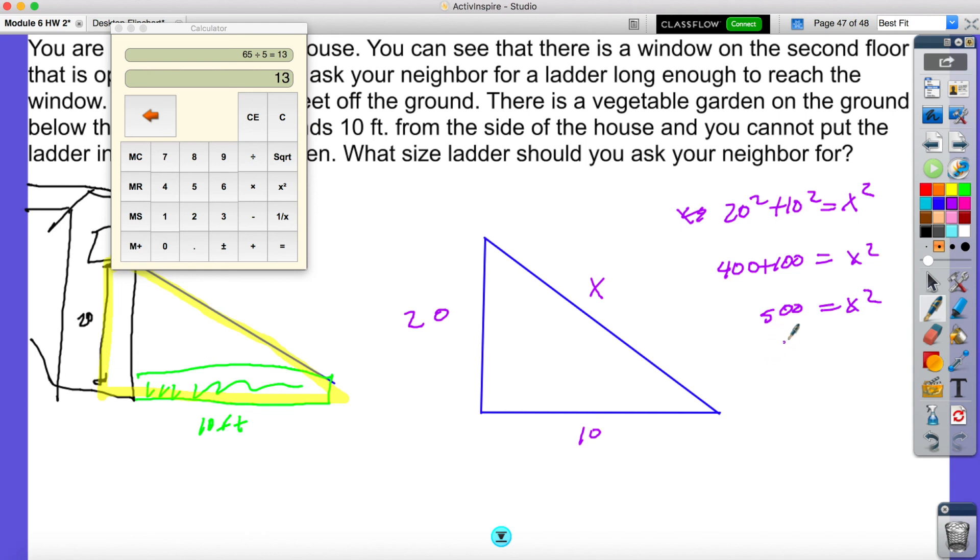Which means it would be, I would need to take the square root of both sides, and I would have x equals the square root of 500. So now I'm going to break this down. This is 10 times 50. This is 10 times 5. Then I have my pair of 5s. So then I would have 10 radical 5. So 10 radical 5 feet.